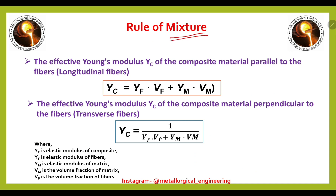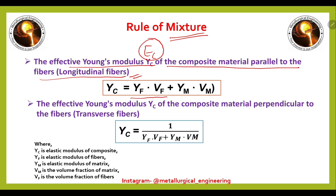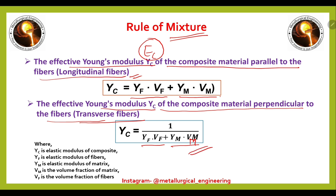Now we will see the rule of mixture for calculating Young's Modulus in composites. The effective Young's Modulus EC of the composite material parallel to the fibers (longitudinal) is: EC = EF·VF + EM·VM. The effective Young's Modulus EC perpendicular to the fibers (transverse) is: 1/EC = VF/EF + VM/EM. Here, EC is the elastic modulus of the composite, EF is the elastic modulus of the fibers, EM is the elastic modulus of the matrix, VM is the volume fraction of matrix, and VF is the volume fraction of fibers.